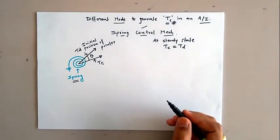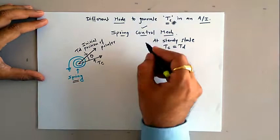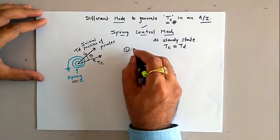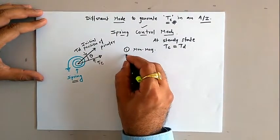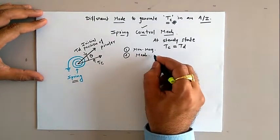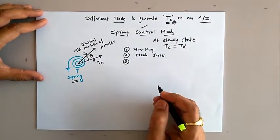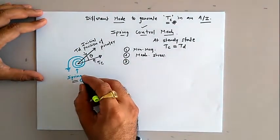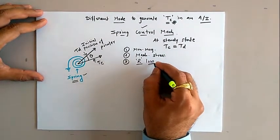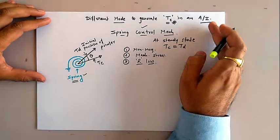Now let us analyze the requirements of the spring commonly used for this mechanism. The first requirement is that the spring must be non-magnetic in nature. Second, it must be free from all mechanical stresses or mechanical fatigue. Third, the material selected for fabricating the spring must offer a very low value of resistance.